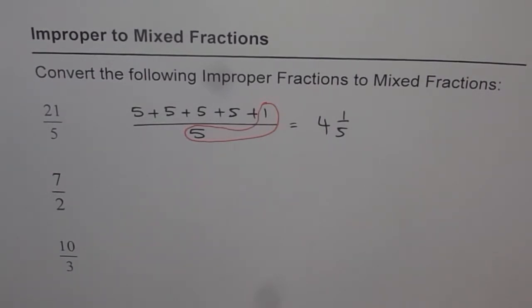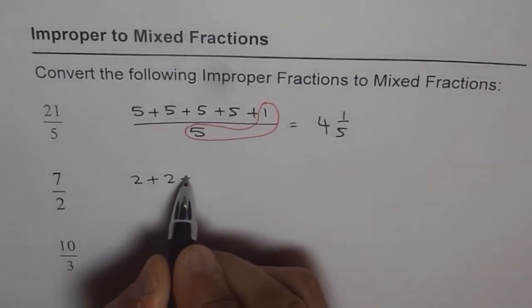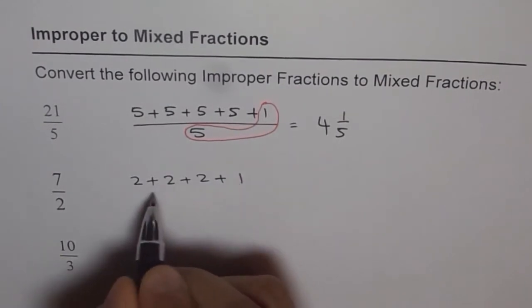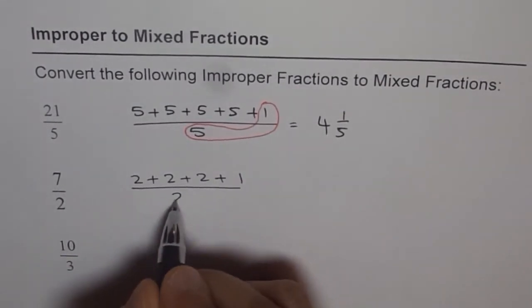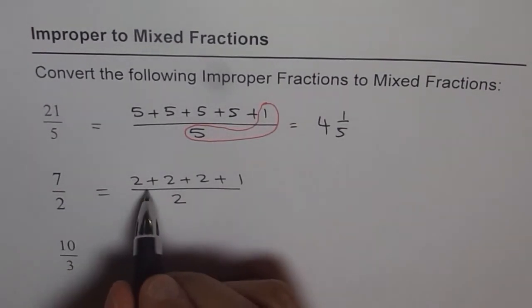Now, let's do the next one. 7 over 2. How many 2's in 7? We say 2 plus 2 is 4, 4 plus 2 is 6. So you are left with 1. That's it. So we can say this is equal to this.